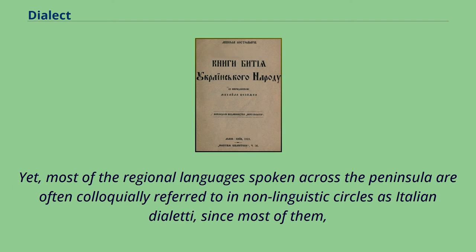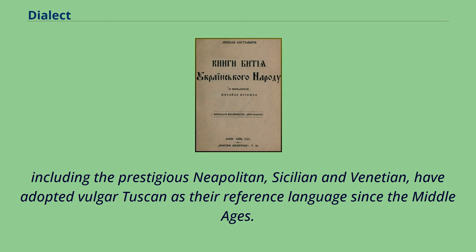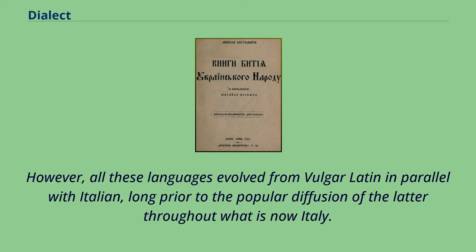Yet most of the regional languages spoken across the peninsula are often colloquially referred to as Italian dialetti, since most of them — including the prestigious Neapolitan, Sicilian, and Venetian — have adopted Vulgar Tuscan as their reference language since the Middle Ages. However, all these languages evolved from Vulgar Latin in parallel with Italian, long prior to the popular diffusion of the latter throughout what is now Italy.